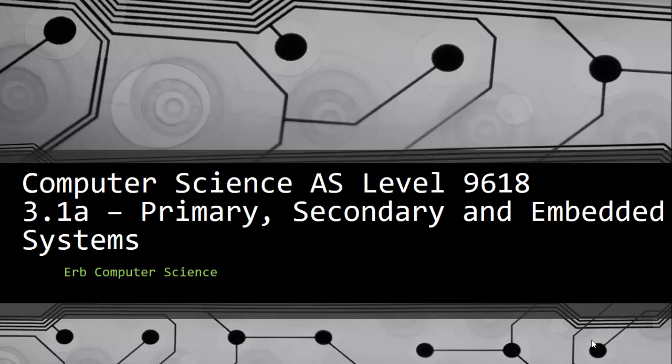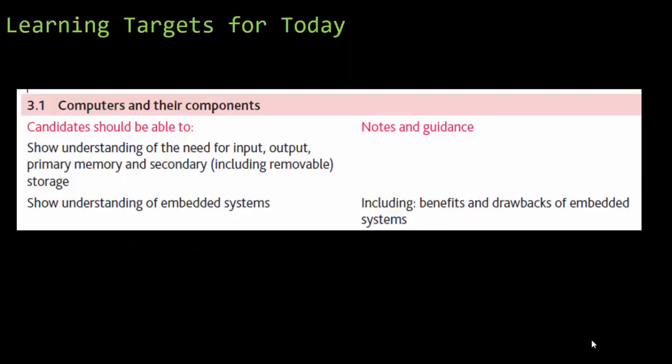This is for topic 3.1A for Computer Science 9618, taking a look at primary and secondary storage, embedded systems, as well as some RAM. The learning targets are: candidates should be able to show understanding of the need for input, output, primary memory, and secondary storage including removable storage, and show understanding of embedded systems including the benefits and drawbacks.